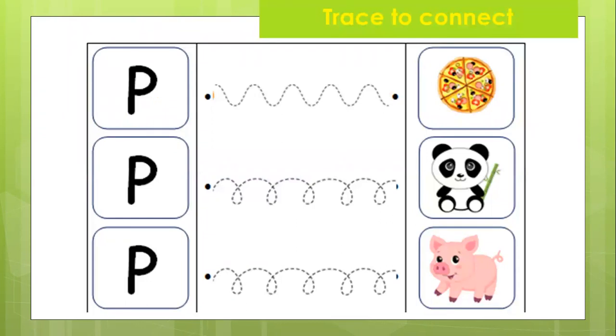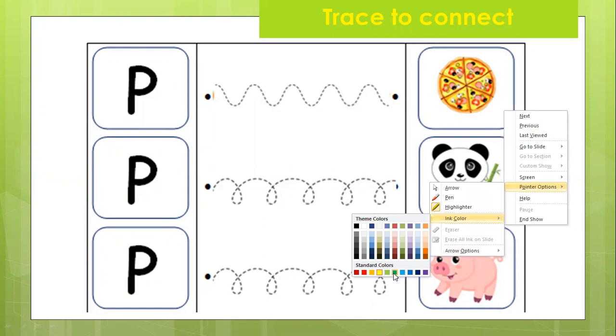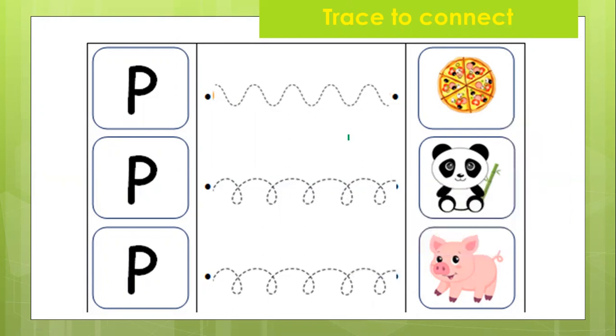Okay, now let's trace to connect the letter P with its picture. All right, now let me choose a color. Let me take green or maybe pink. I think pink is too light. Let me take green then. Okay, now this is the letter P, right? It's the letter P.